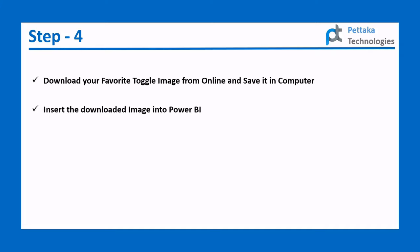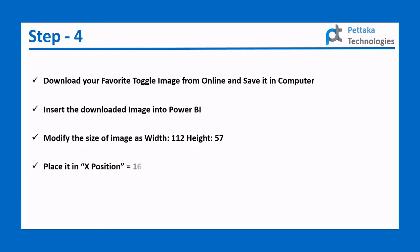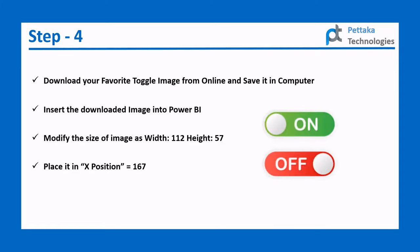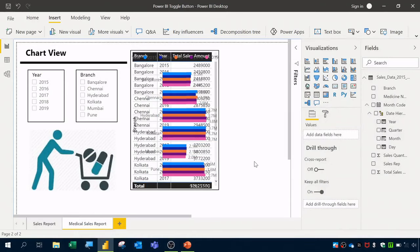In Step 4, download your favorite toggle image online, save it to your computer, and insert it into Power BI. Modify the image size to width 112 and height 57, and place it at X position 167. If you'd like to use the same toggle image I'm using, you can request it in the comments section.